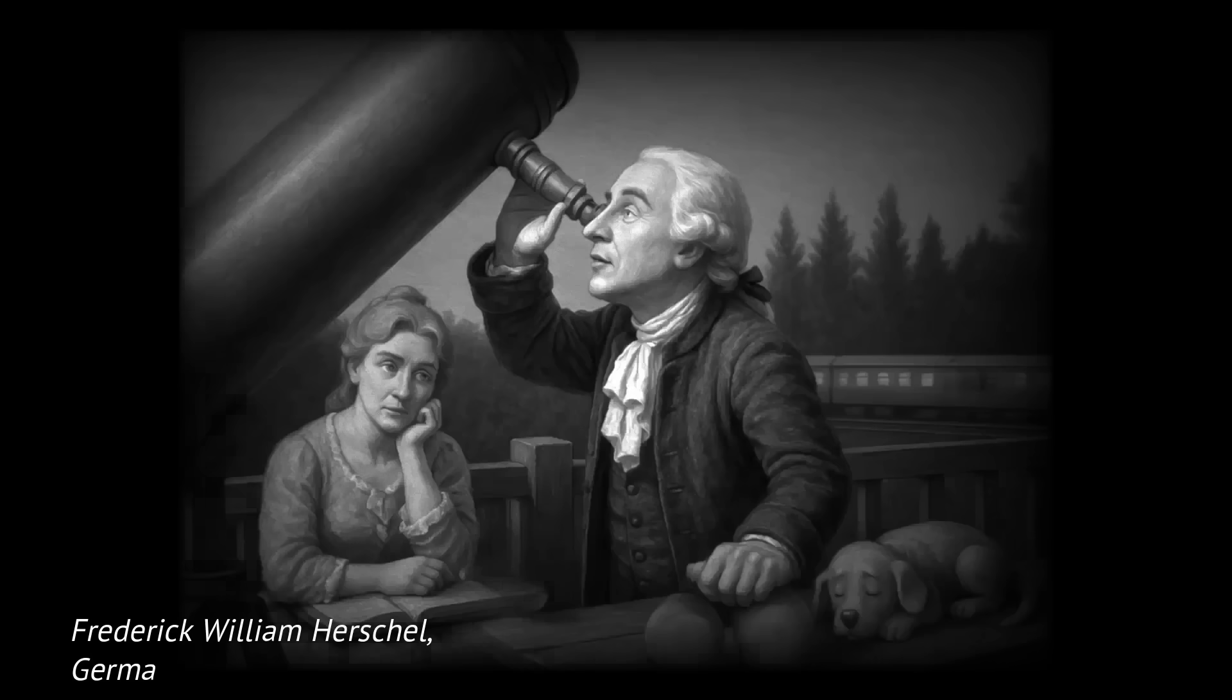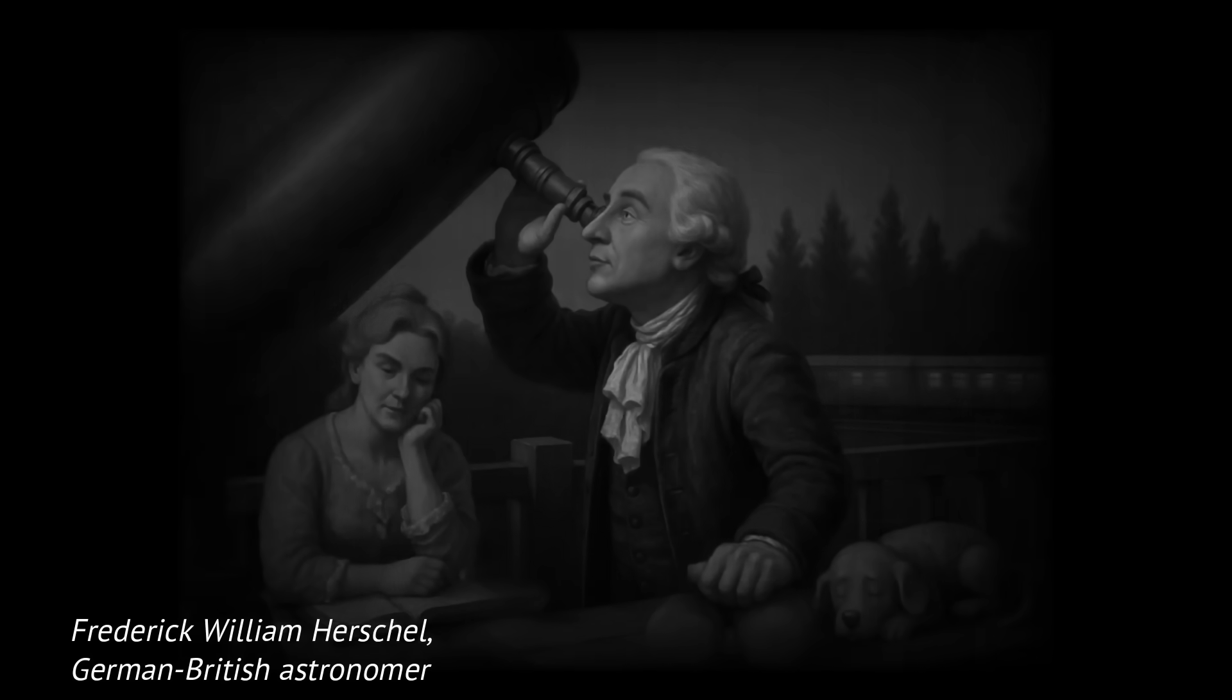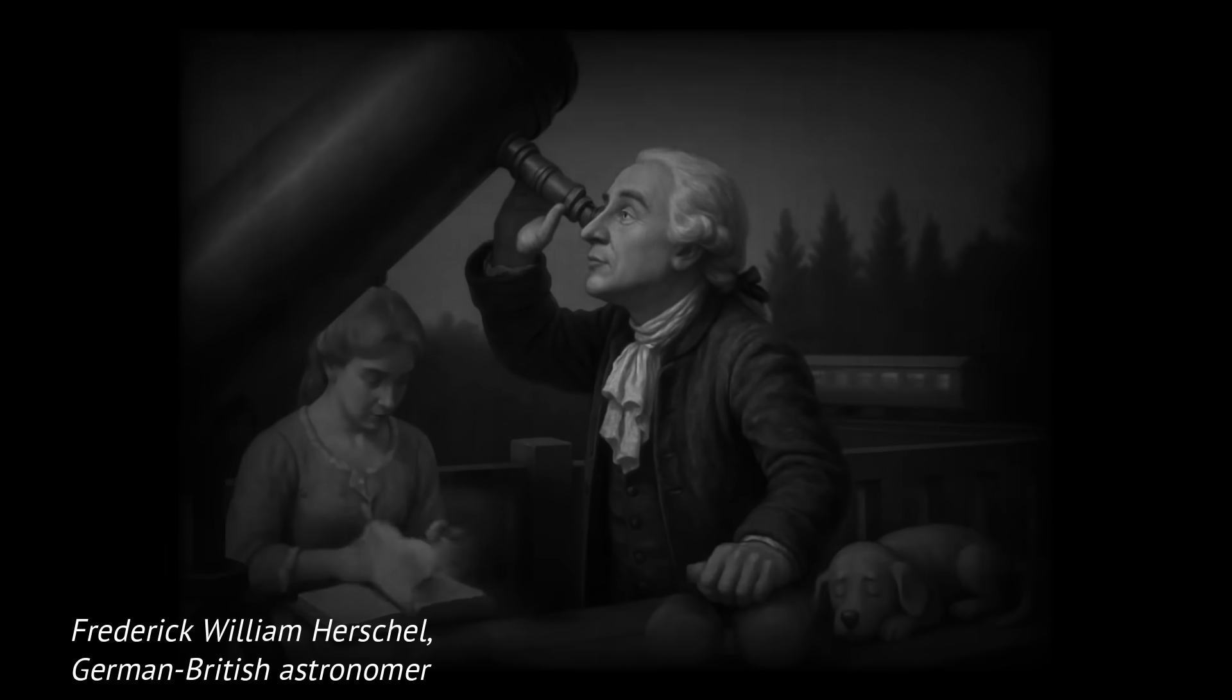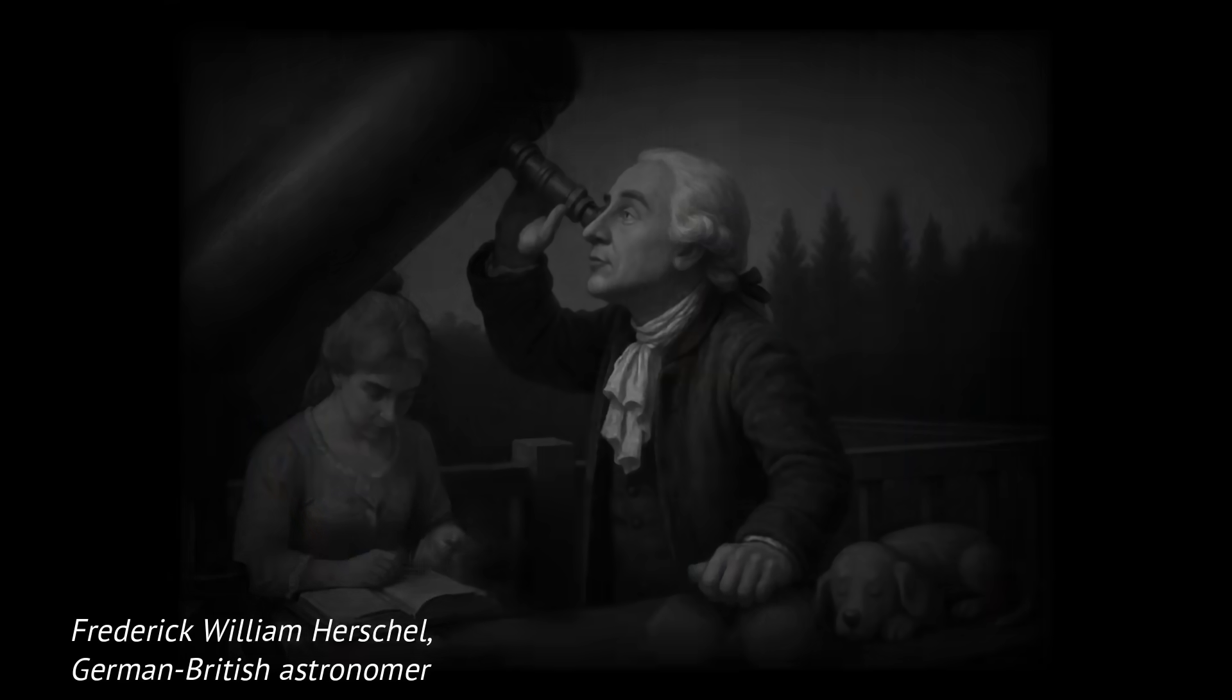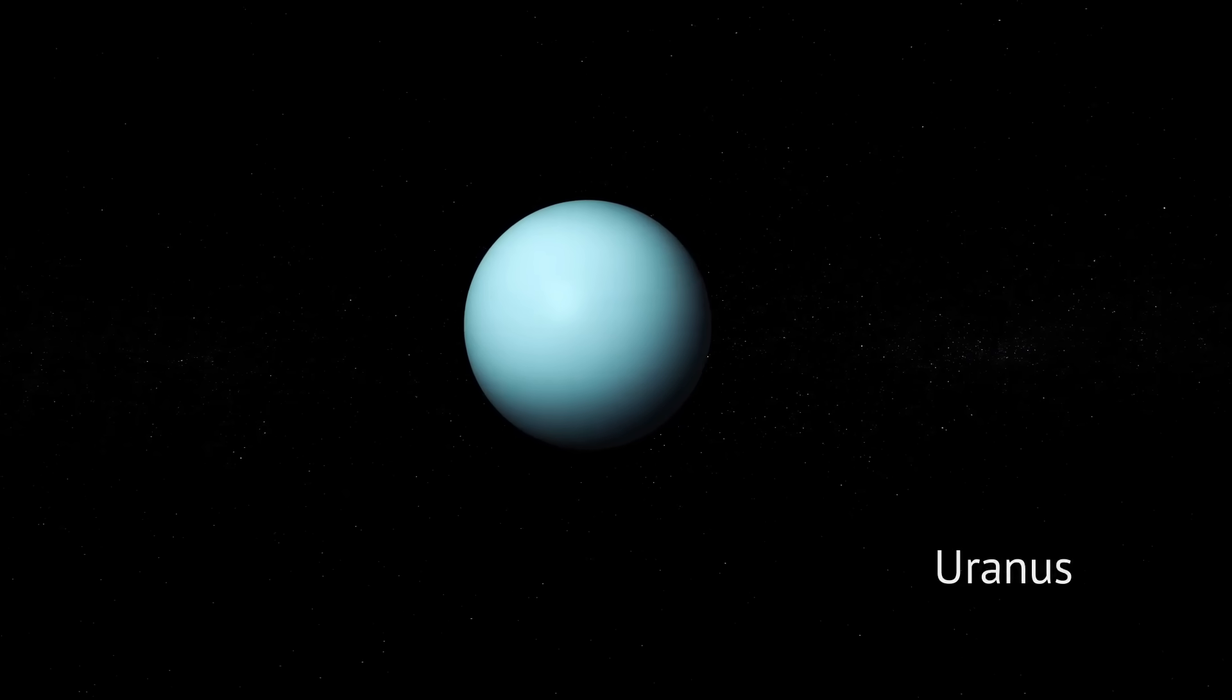In 1781, an English astronomer named William Herschel was scanning the sky with a telescope he built himself. He was looking for comets, but instead, he stumbled upon a new object that didn't quite behave like a comet. Over time, astronomers realized this object was orbiting the sun like a planet, slow, steady, and distant. They named it Uranus.